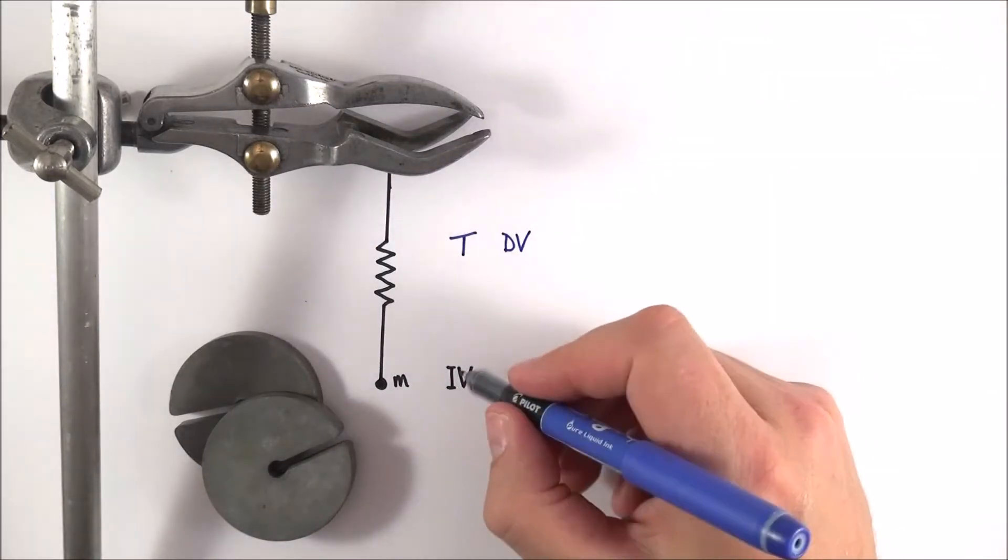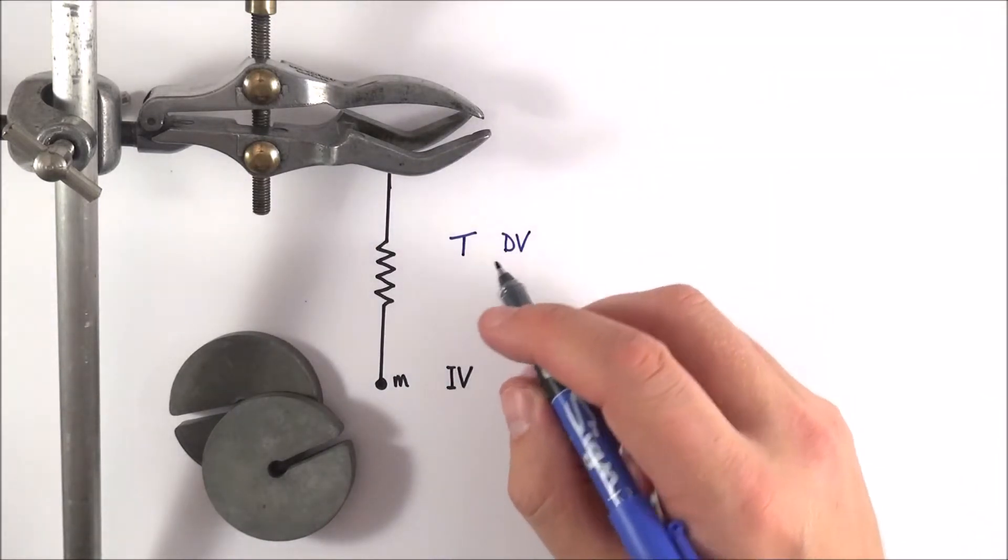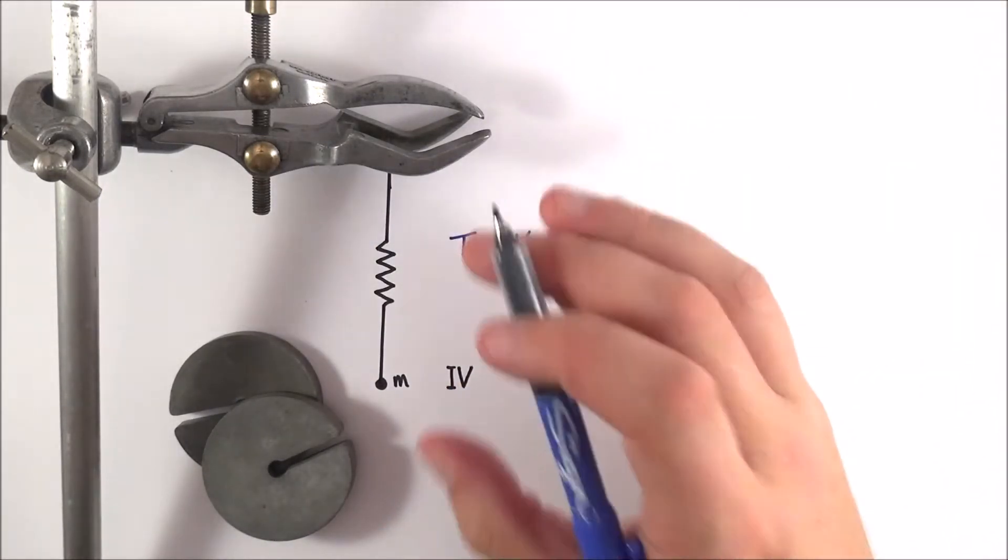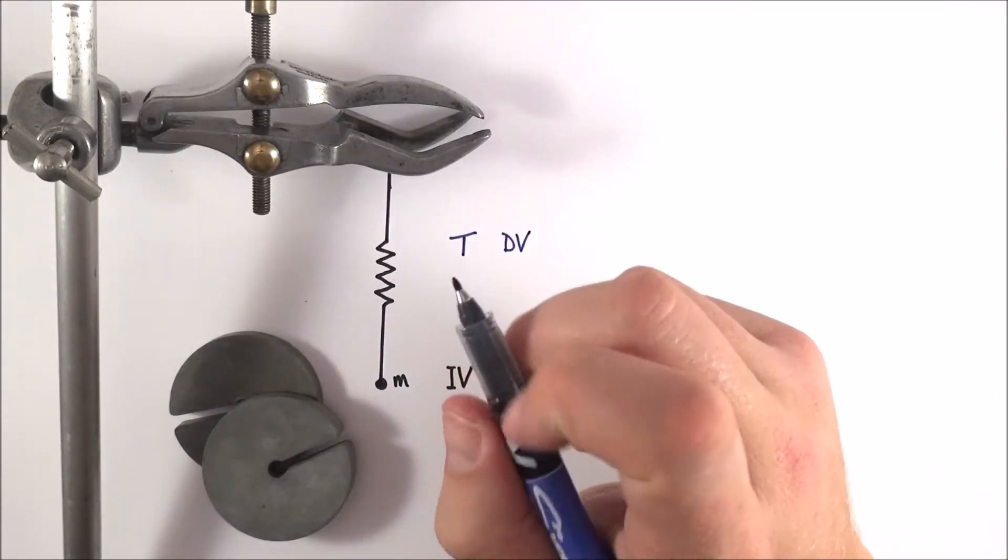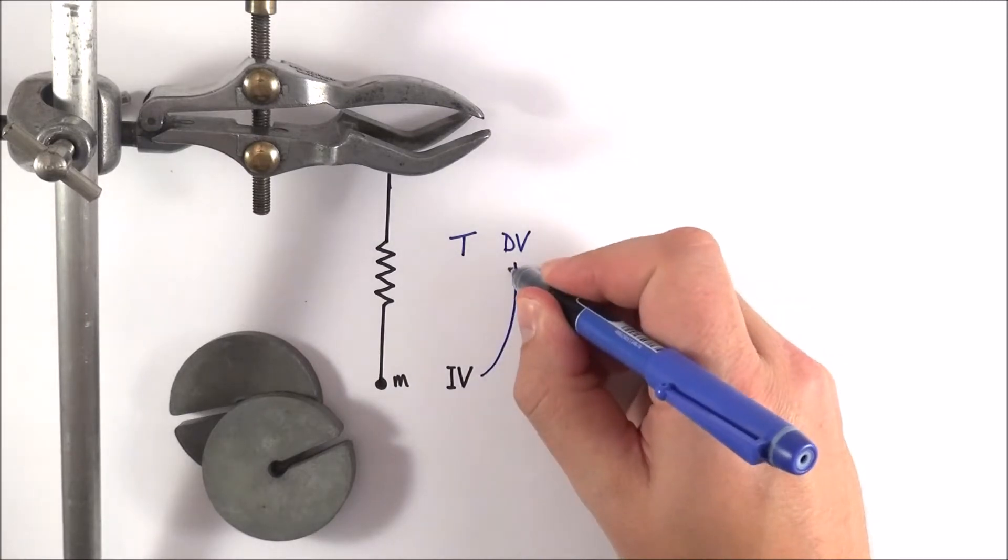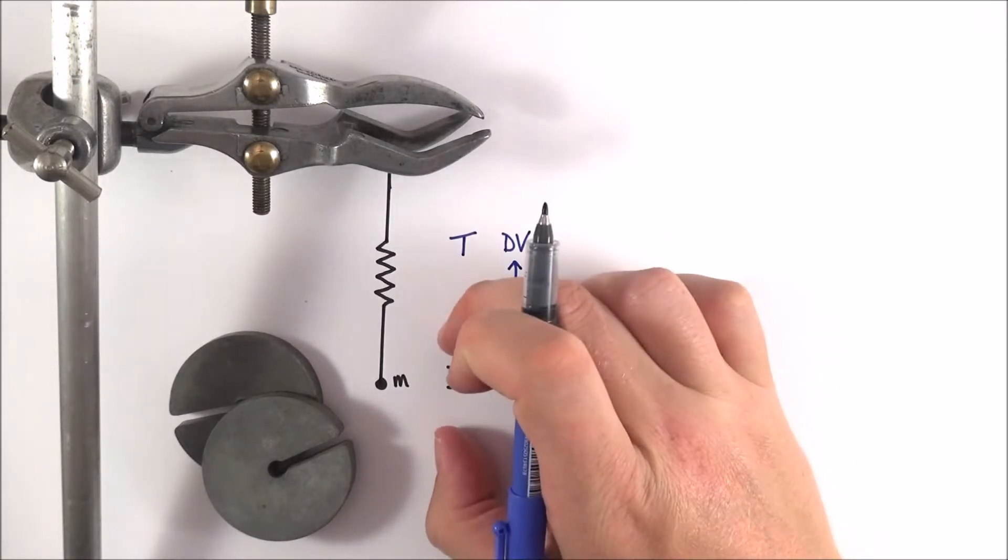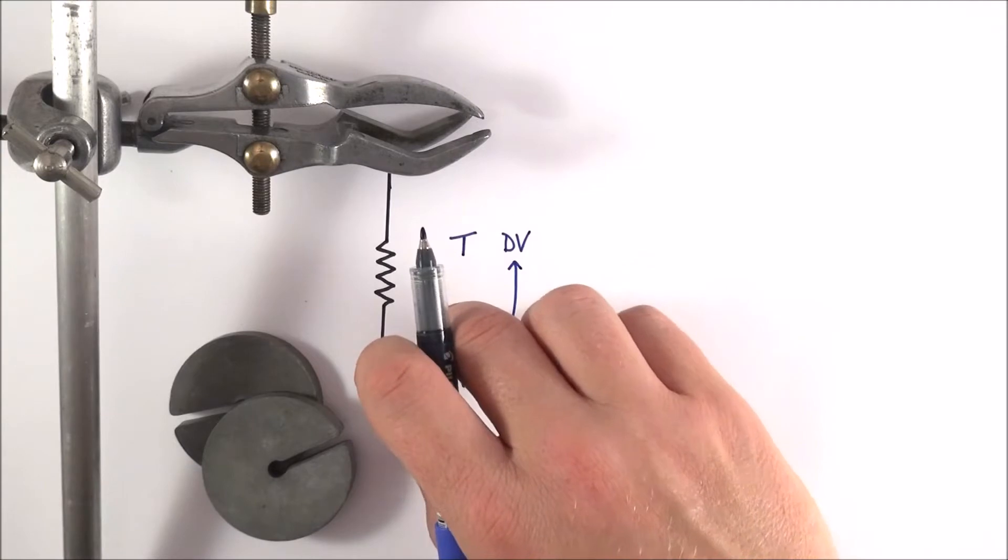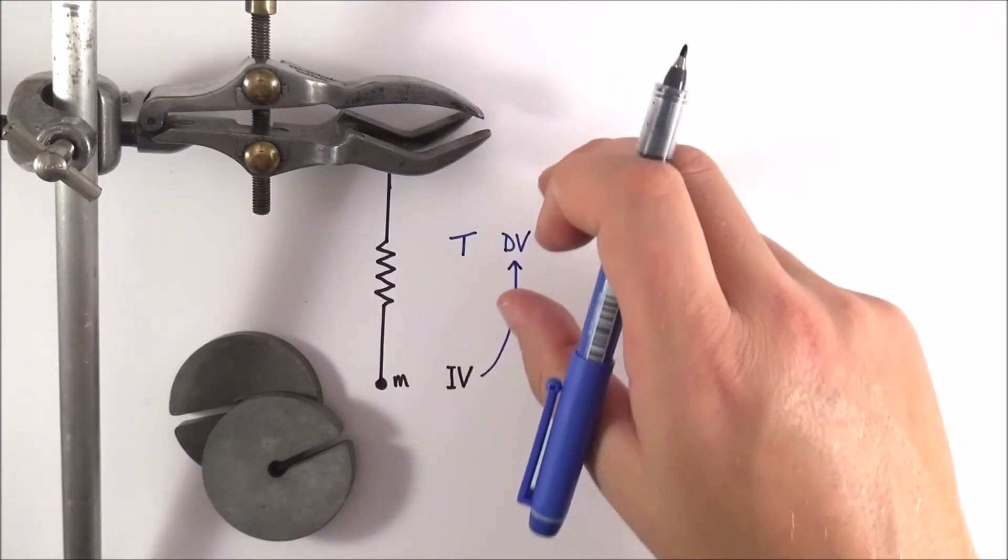And in order to look at the link between the independent and the dependent we need to make sure that we carry out a fair test. Now a fair test is one in which only this independent variable affects the dependent variable. And if it's only this one thing which is changing we've then got a very good idea that it's maybe this thing here which affects something else.